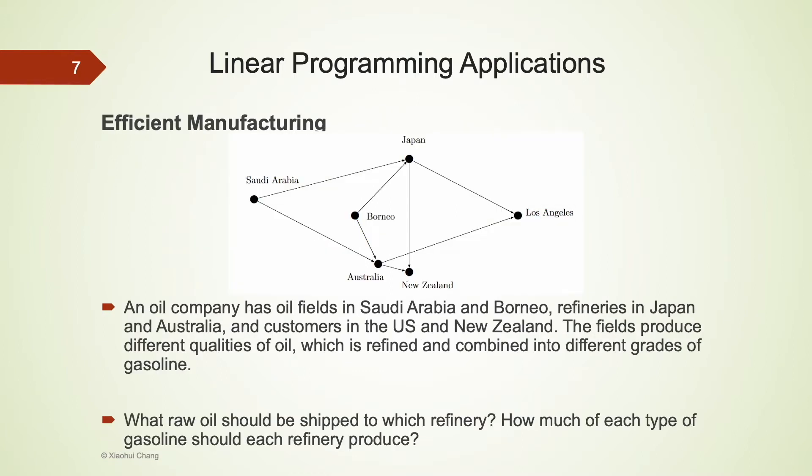Linear programming is very useful for efficient manufacturing and production. For example, there are oil fields in Saudi Arabia, oil refineries in Japan and Australia, and customers in the US and New Zealand. What raw oil should be shipped to which refineries?